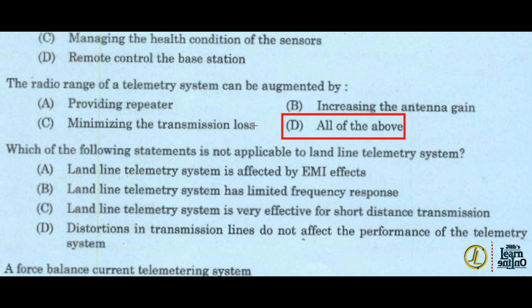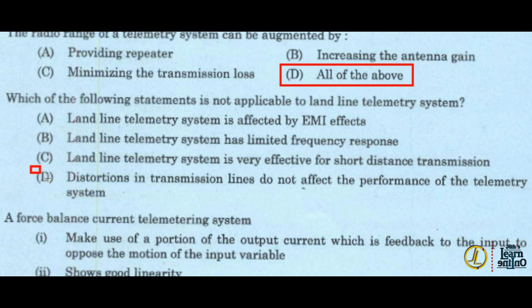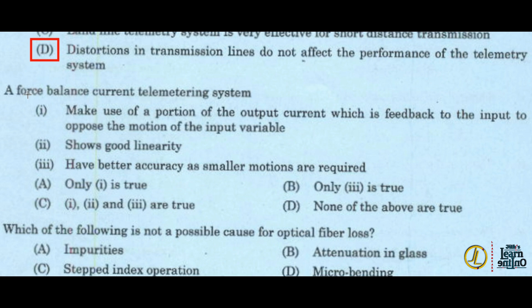Which of the following statement is not applicable to landline telemetry system? The answer is option D: distortions in transmission line do not affect the performance of the telemetry system, which is not applicable.